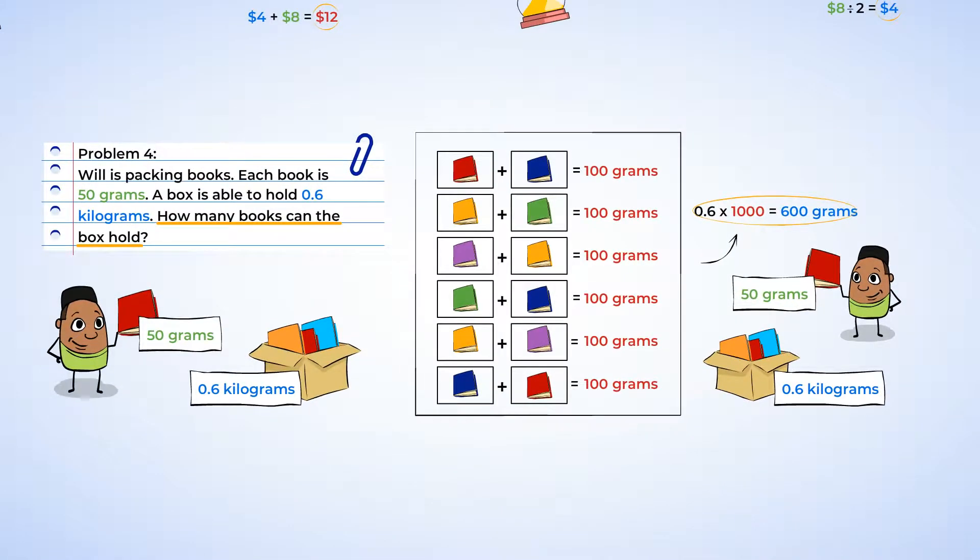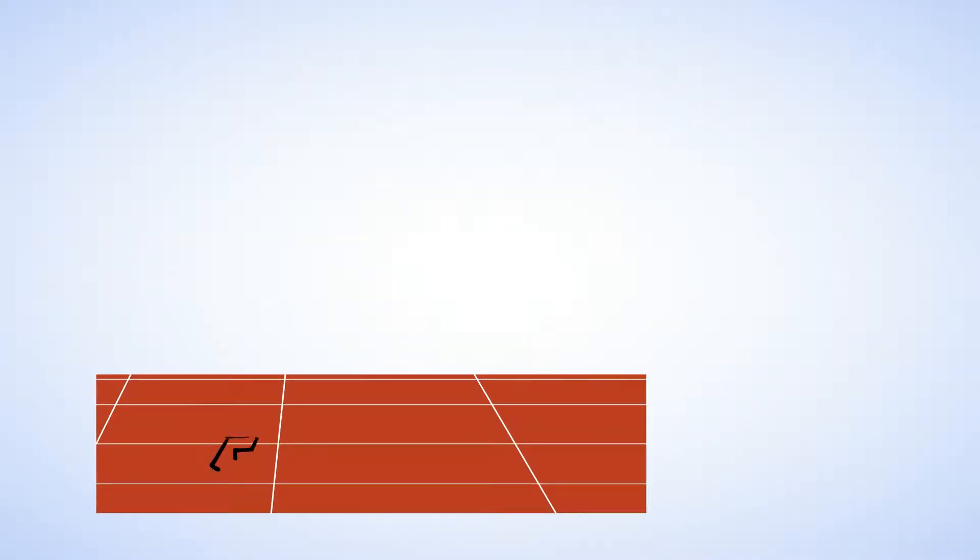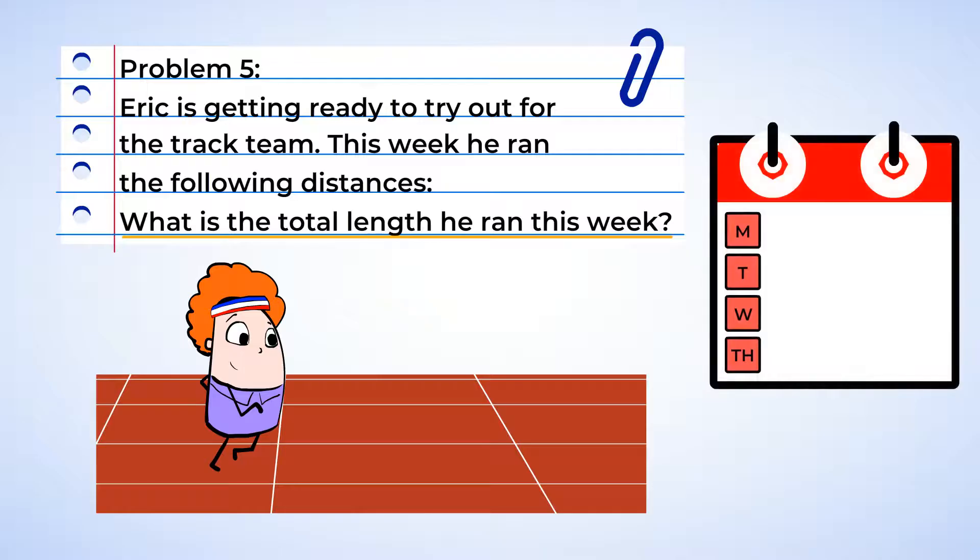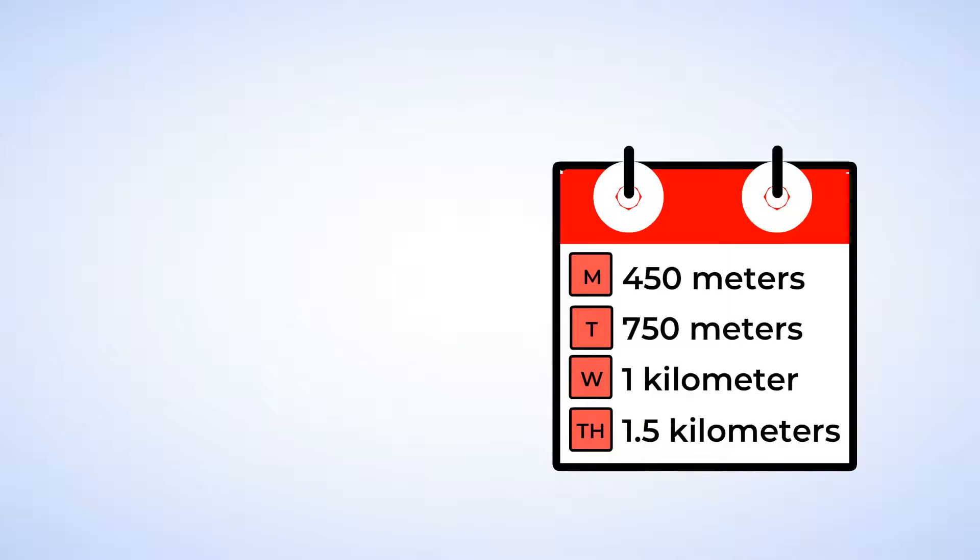We better stretch out before this next problem because I don't want to pull anything. Now, Eric is getting ready to try out for the track team. And in order for us to find out how far he ran in total during the week, we're going to need to look at the amount he ran each day. He ran 450 meters on Monday and 750 meters on Tuesday. He then ran one kilometer on Wednesday and one and a half kilometers on Thursday. So we have two different measurements. We've got meters and kilometers. Let's change our kilometers to meters by multiplying by 1,000.